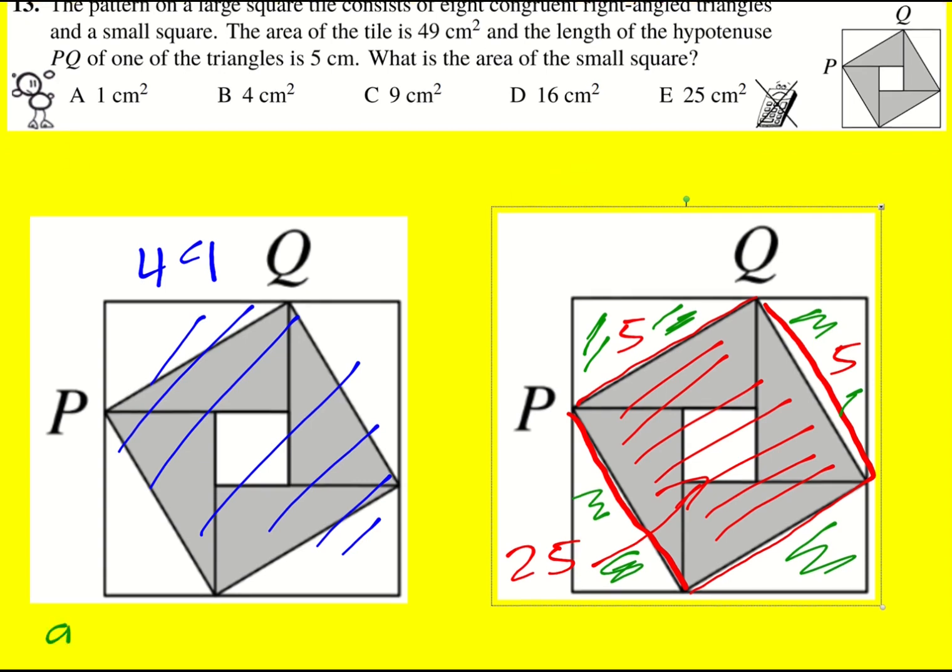Just down here, green area is going to equal 49 minus 25, which is 24.